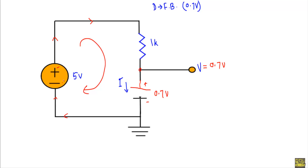The direction of current will flow from the positive terminal toward the negative terminal of the source. Current entering this 1 kilo ohm resistor means this side will be positive and the other side negative. To calculate the current in this circuit I simply apply KVL in this series loop, which will give me the current flowing through the diode D.